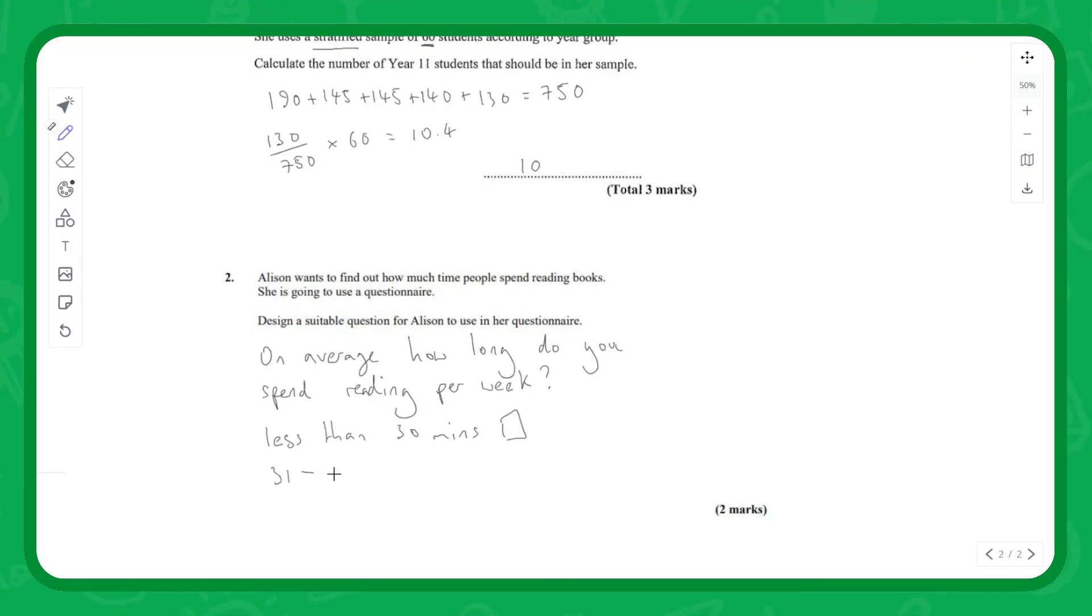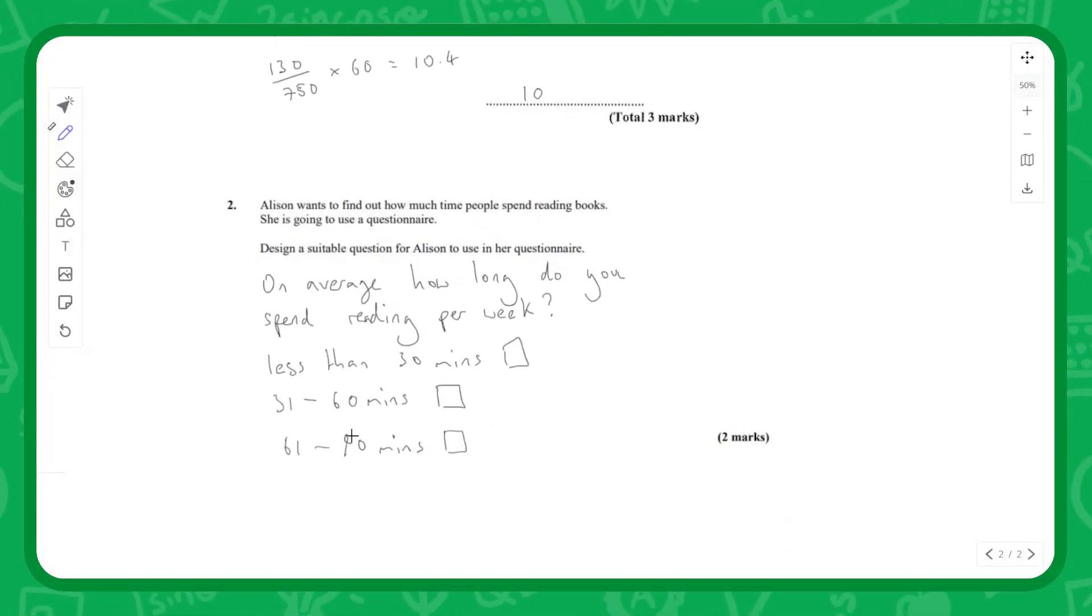Then we could say our next option could be 31 to 60 minutes—give them a box to tick there. Some people might do 61 to 90 minutes. We might do one more like this. If you read more than an hour and a half or two hours a week, it's not that obvious to most people how long exactly they spend. We could do 91 to, you know, between an hour and a half and three hours.